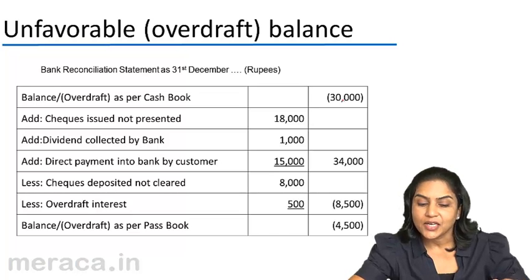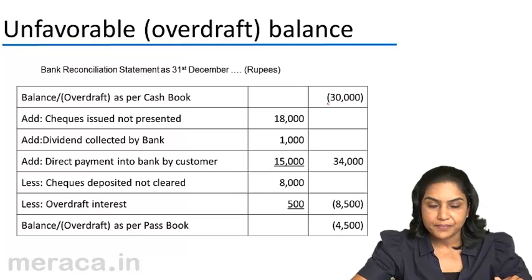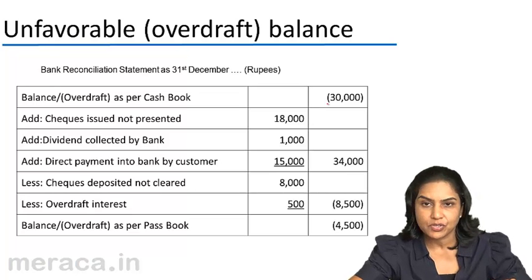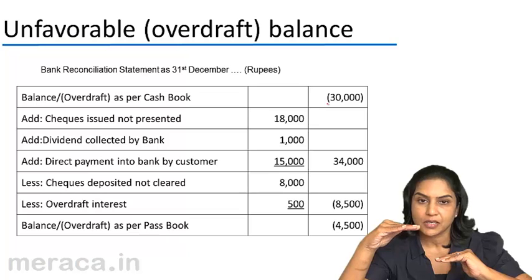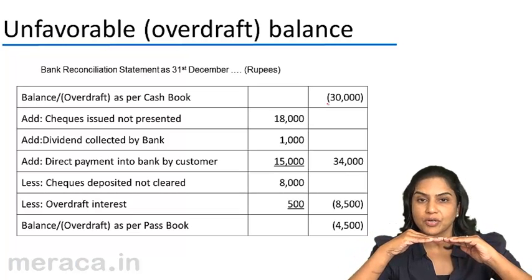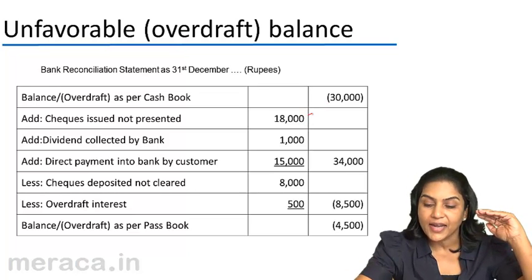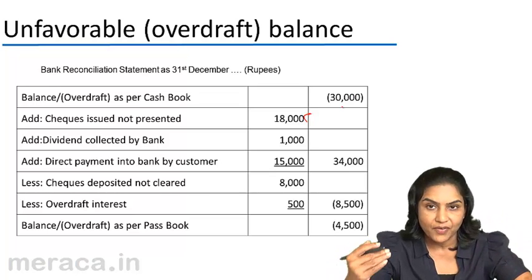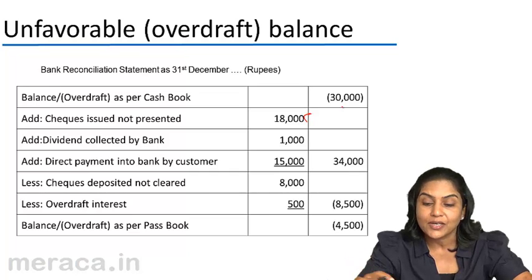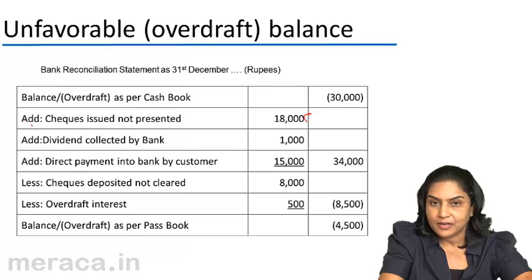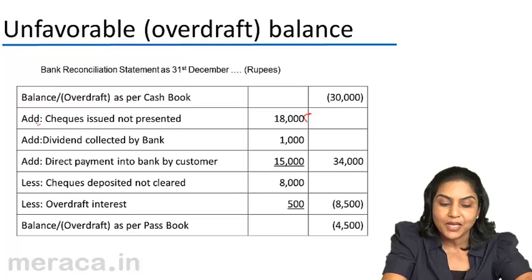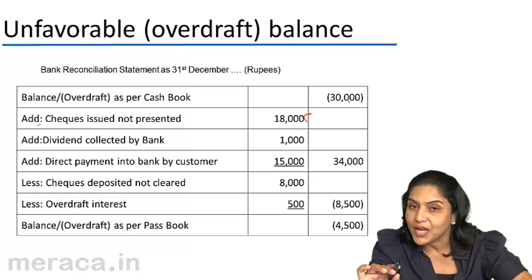In this example, we have started with an overdraft as per cash book of 30,000, therefore indicated with a minus figure. Now when checks are issued and not presented — when checks are issued, the cash book balance comes down. We have started with the cash book, so to arrive at the passbook we would add checks issued not presented. We have added 18,000, but we have added 18,000 to minus 30,000. The net effect is an overdraft of 12,000. Though we have added in the presentation, it is being added to a negative balance, therefore in effect we are subtracting.